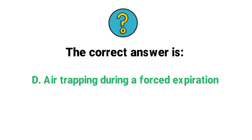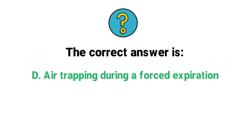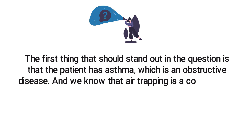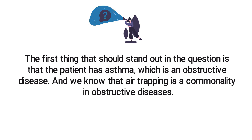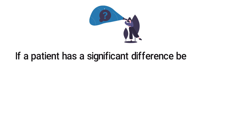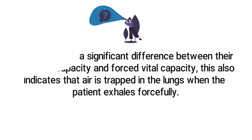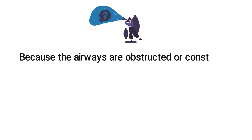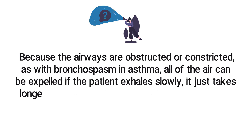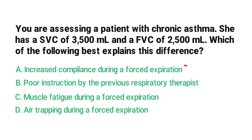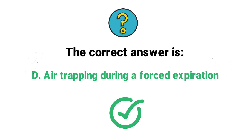The correct answer is D, air trapping during a forced expiration. The patient has asthma, which is an obstructive disease, and air trapping is common in obstructive diseases. A significant difference between slow vital capacity and forced vital capacity indicates that air is trapped in the lungs when the patient exhales forcefully. Because the airways are obstructed or constricted, as with bronchospasm in asthma, all of the air can be expelled slowly — it just takes longer. This explains why the forced vital capacity values are lower.